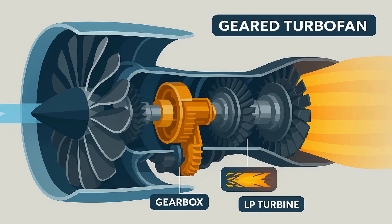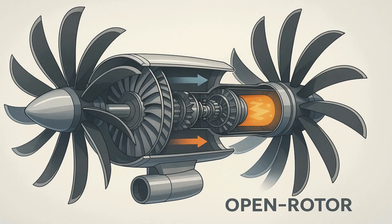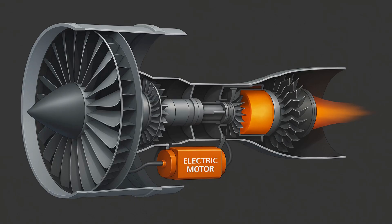Looking ahead, the next generation of jet engines promises even greater efficiency and lower emissions. Geared turbofan designs insert a gearbox between the fan and turbine shafts, letting each spin at its optimal speed. Open rotor concepts ditch the duct entirely, using counter-rotating propellers for bypass ratios above 15, which could cut fuel burn by up to 30%. Hybrid electric systems plan to pair turbines with electric motors for takeoff and climb, smoothing peak power demands. Additive manufacturing prints complex cooling channels in single-piece structures, reducing weight and part counts.